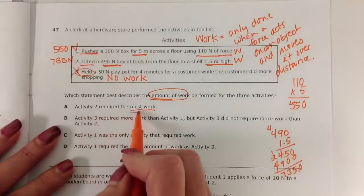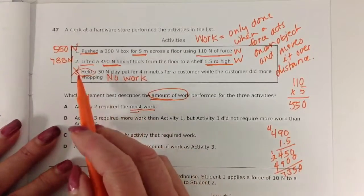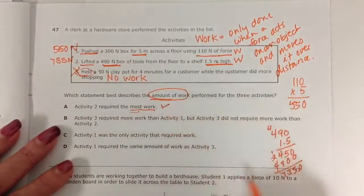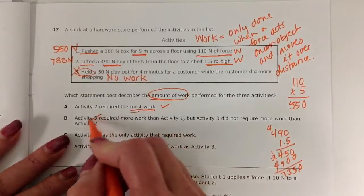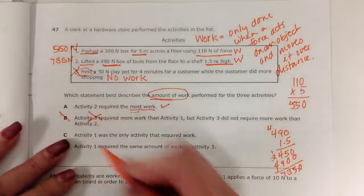Activity two required the most work. Well, as far as I can tell right now, that could be true. That's a true statement. Activity three required more work than activity one? Activity three required no work, so that's out.